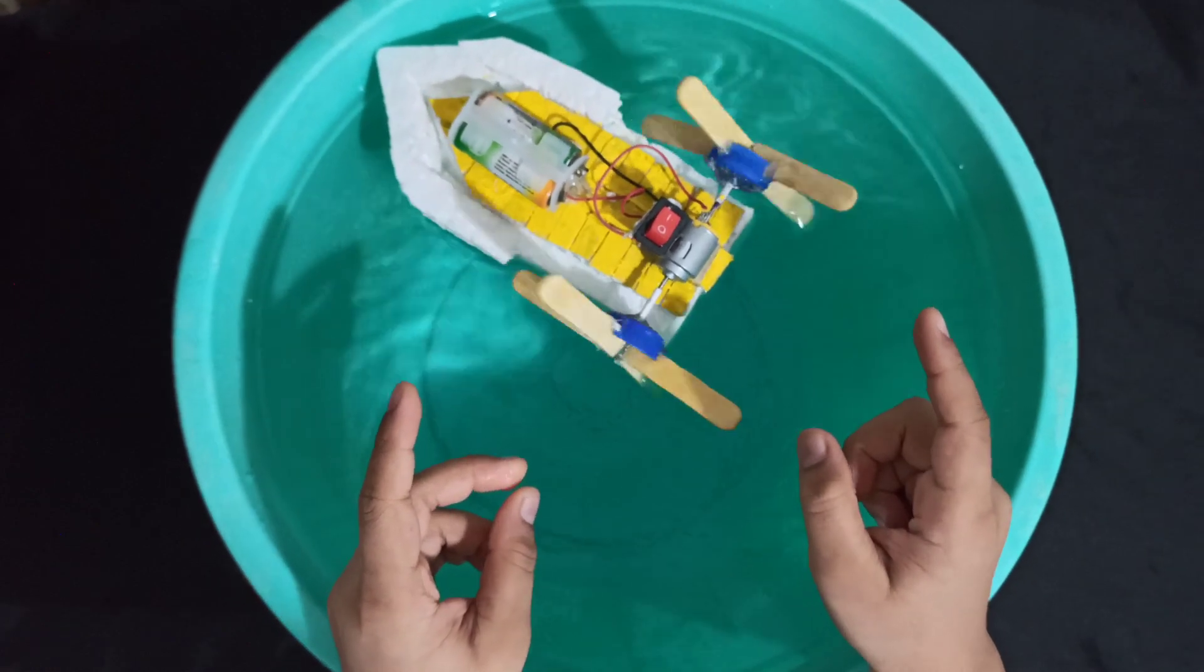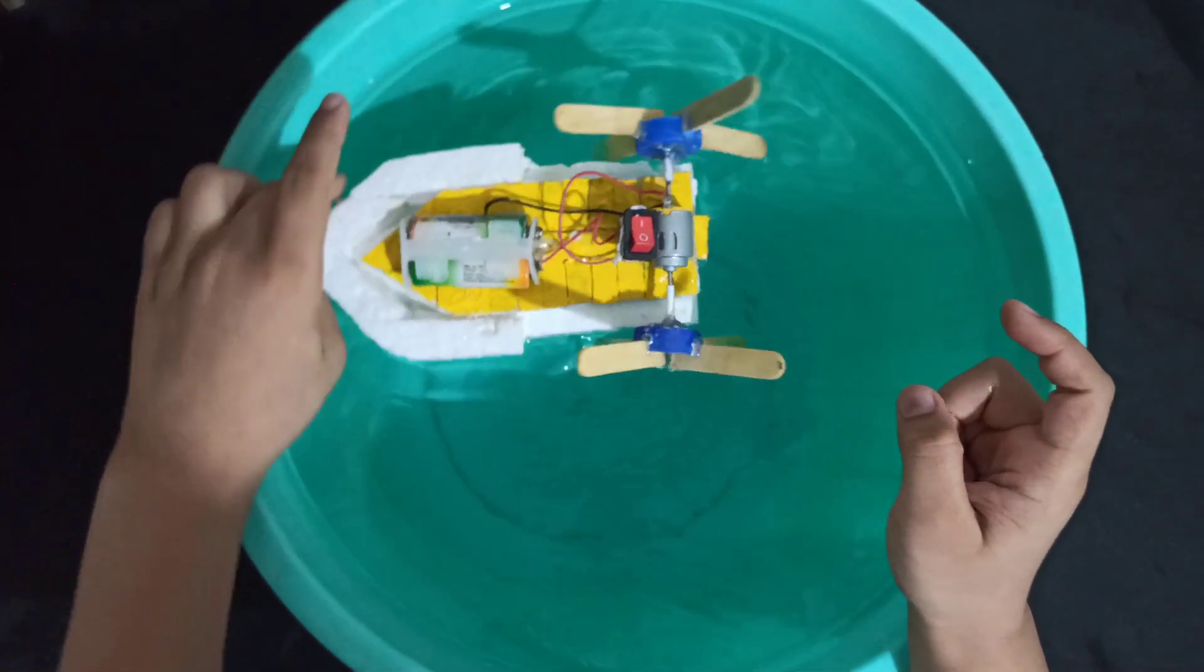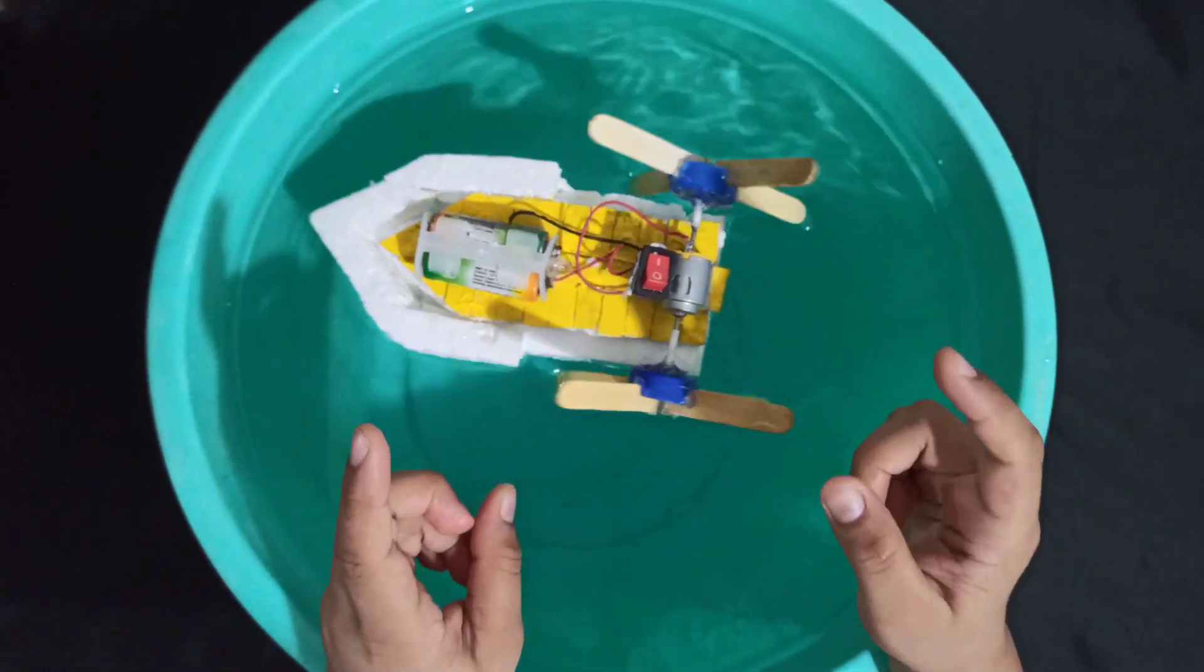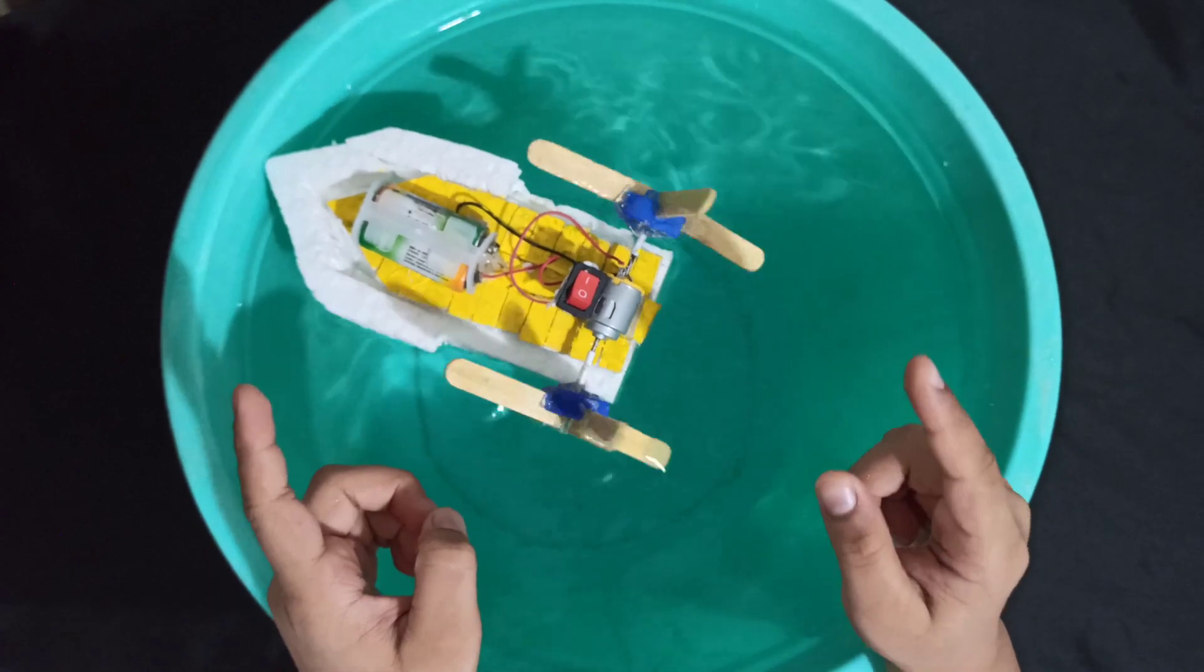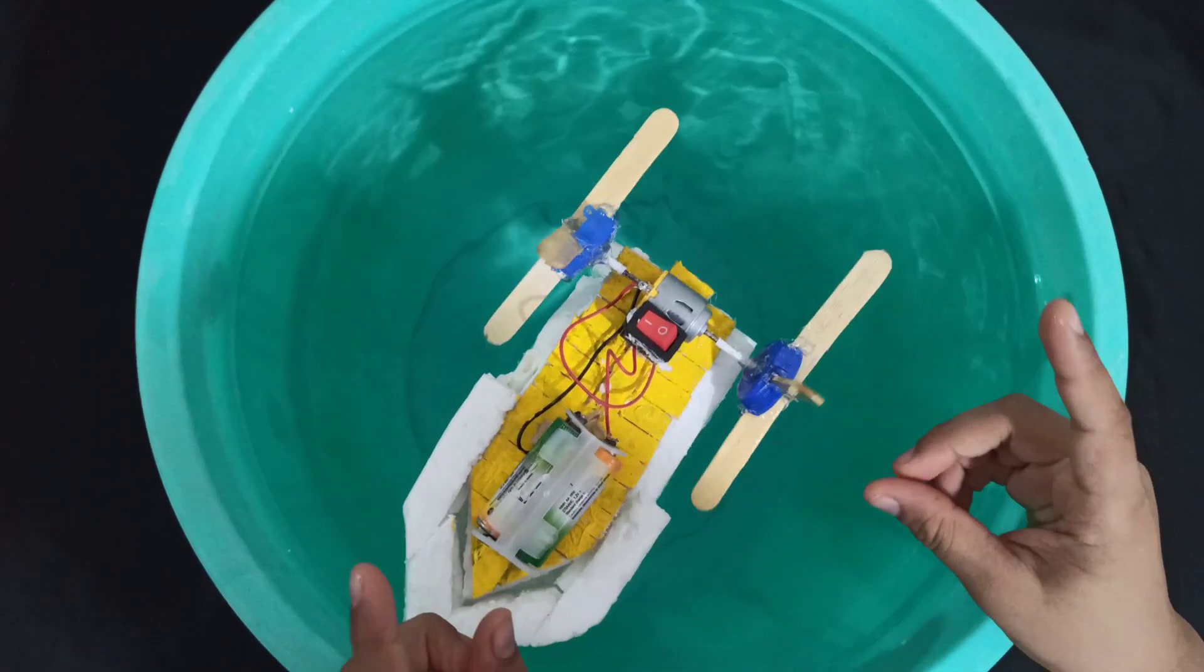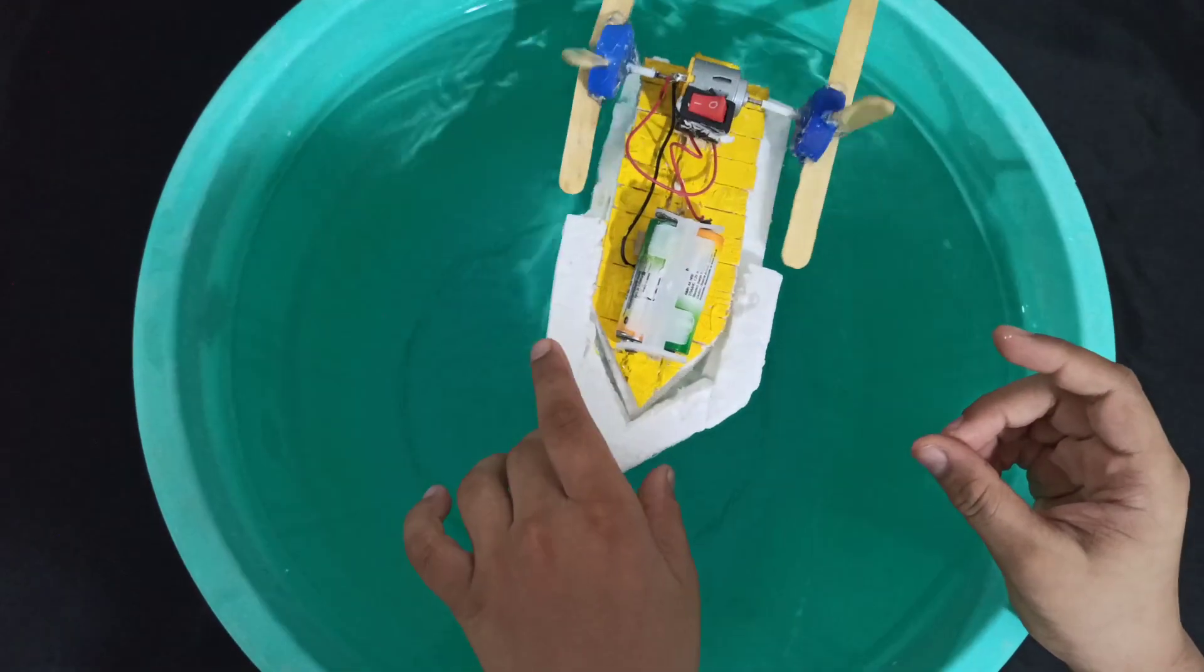As you know, here electrical energy is converted into mechanical energy by the double head shaft motor. Since my two paddlers are coupled with the motor shafts, as soon as the motor transfers energy, the two paddlers rotate and help my boat to move forward.